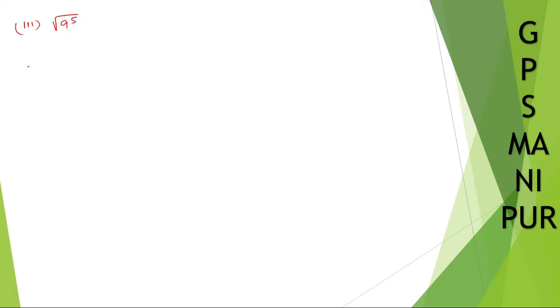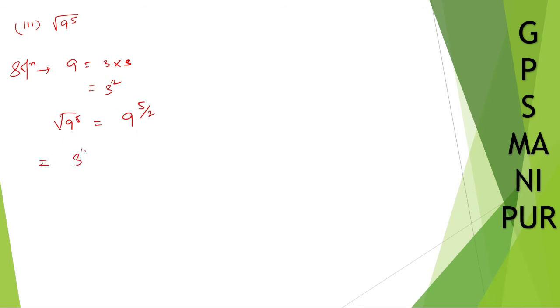Let us do roman number 3: find the value of the square root of 9 to the power 5. Solution: 9 can be written as 3 squared. So root over 9 to the power 5 is 9 to the power 5 by 2. Substituting 3 squared for 9: 3 square into 5 by 2 — the 2s cancel — giving 3 to the power 5. 3 to the power 5 is 3 into 3 into 3 into 3 into 3, which equals 243. So 243 is your answer.